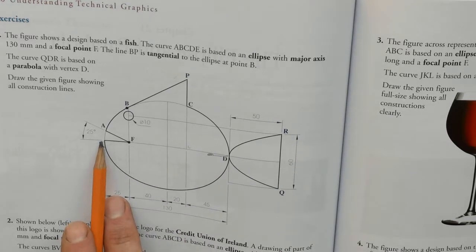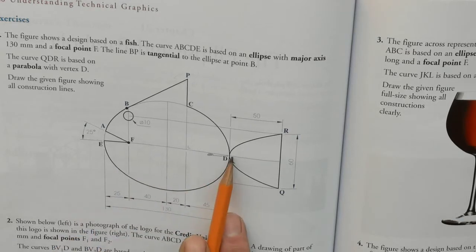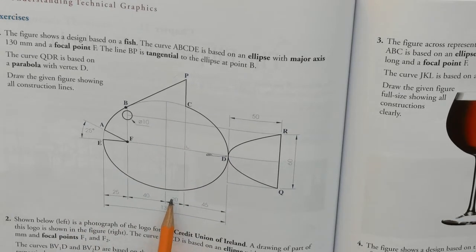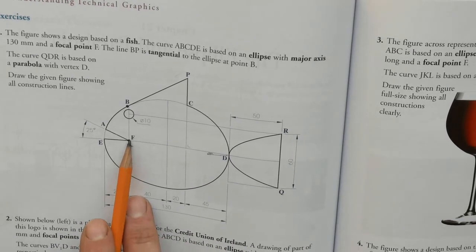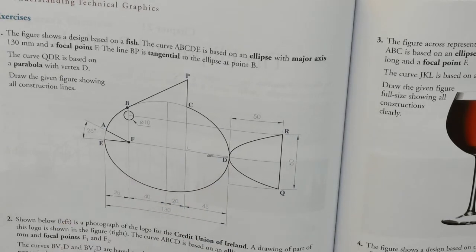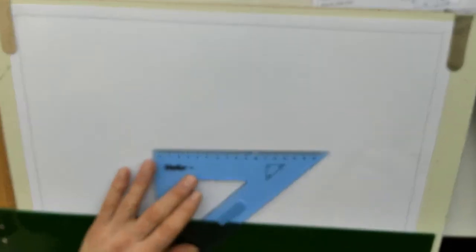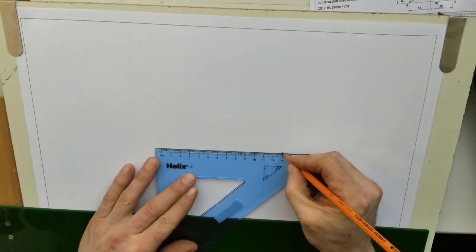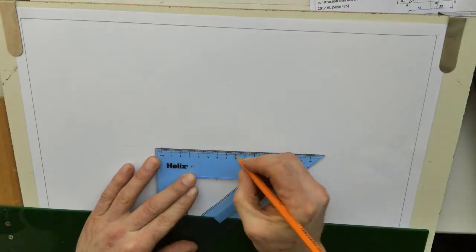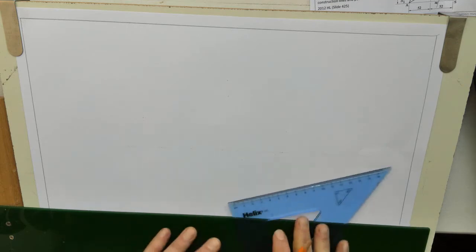So we look for the major and minor axis first. Major is 130. Minor isn't given. So you see what are you given? They're given the focal points. So 130, and the focal is in 25. So I'm going to start with that. In the middle of the page, I'm going to draw a line like that across. On this, I'm going to make that line 130 long.